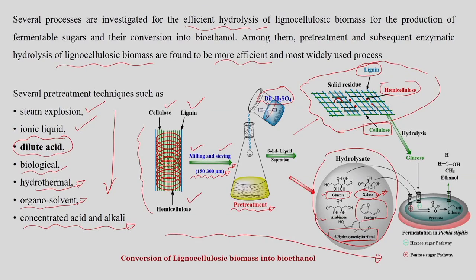The residual biomass containing mainly the cellulose fraction can be enzymatically hydrolyzed to produce hexose sugars in the form of glucose. The C6 and C5 fractions can then be fermented using the hexose sugar pathway and the pentose sugar pathway respectively to produce ethanol. This is how the conversion of lignocellulosic biomass to ethanol takes place.